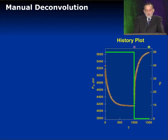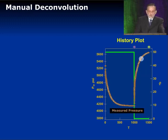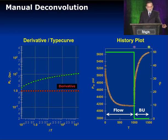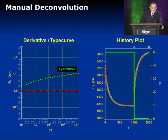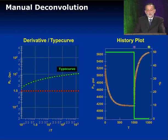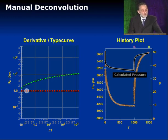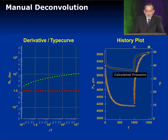What you see on the right is a flow and buildup test — a thousand hours of flow and 500 hours of buildup. The brown points are the measured pressures and the green line is the rate. On the right is the derivative we're starting off with: a flat line, because I didn't know where to start. From this flat derivative we construct our type curve, then convolve it with the flow and shut-in to generate convolved pressure. The solid black line is the calculated pressure — it's nowhere close to the measured data, so this is not a good model.